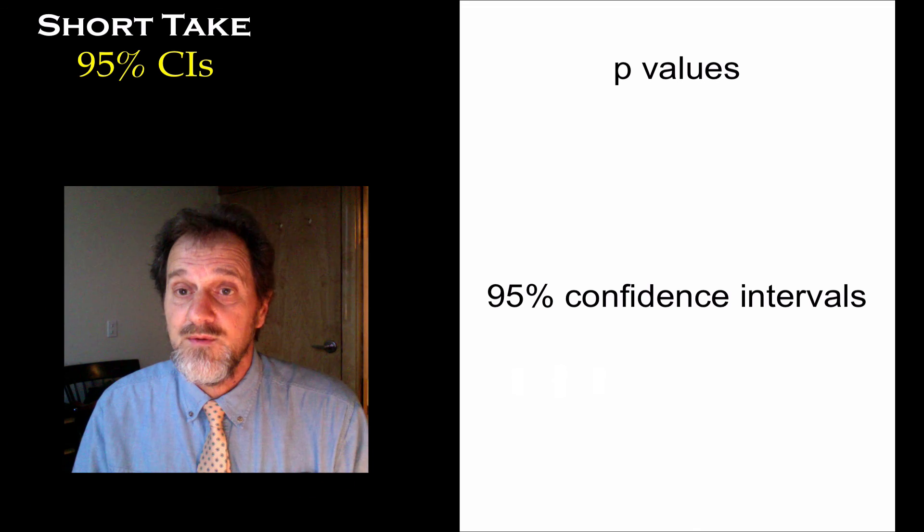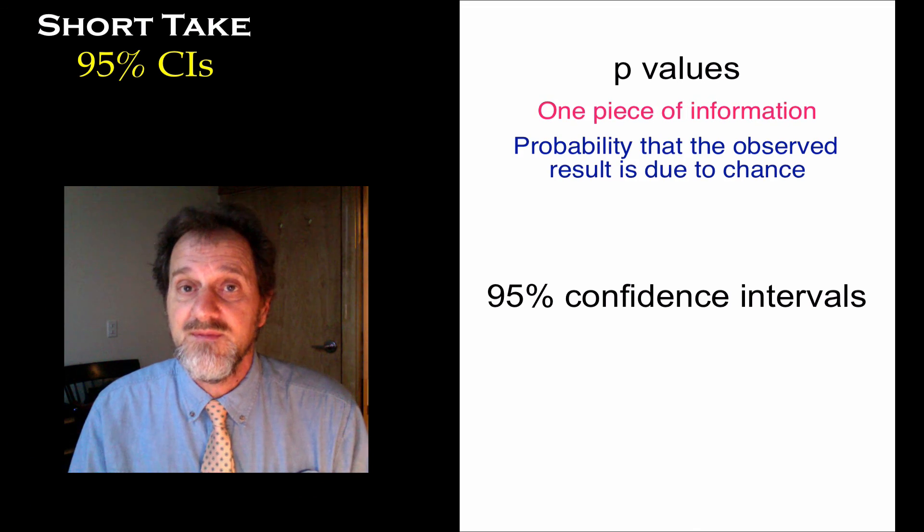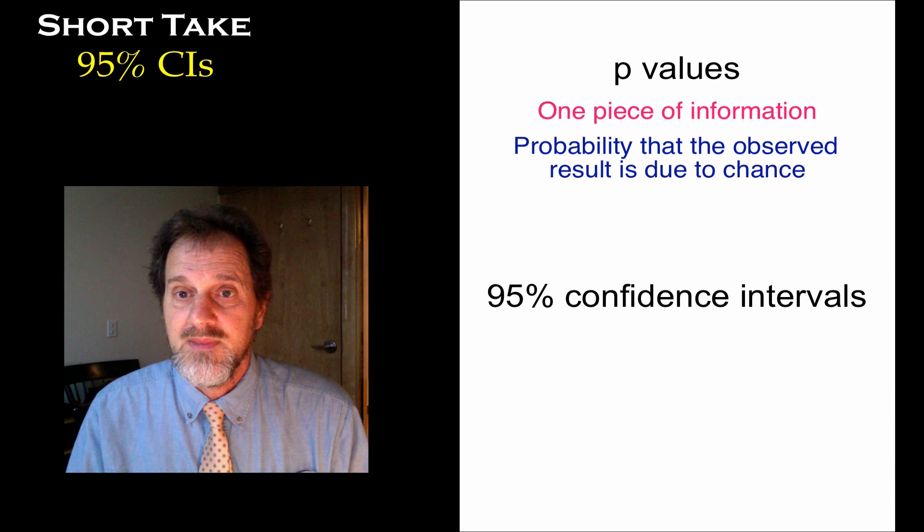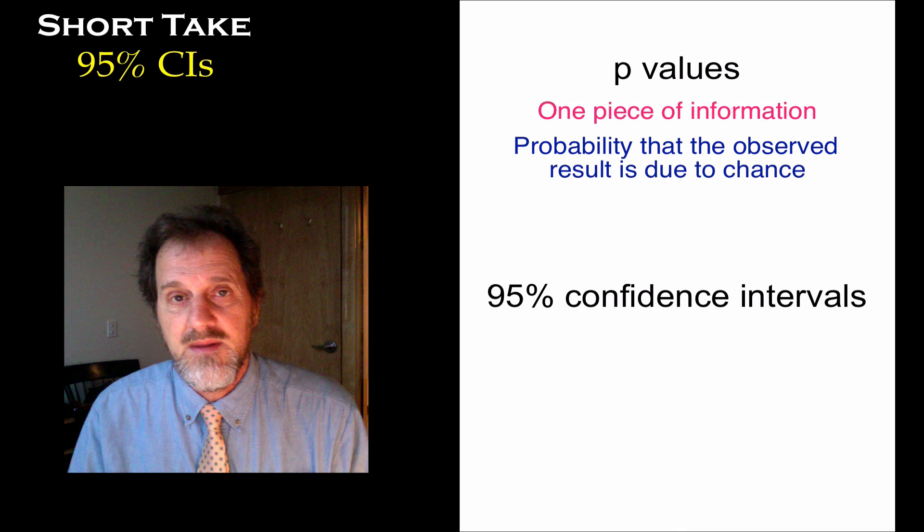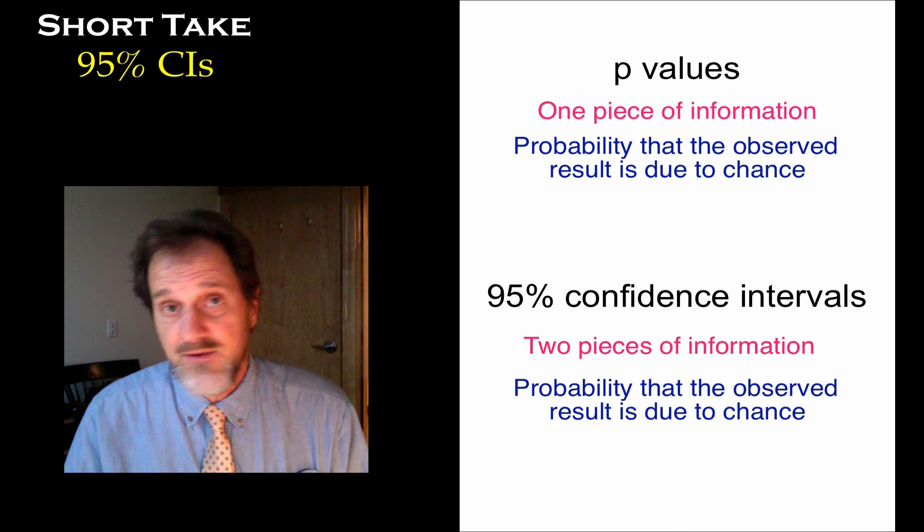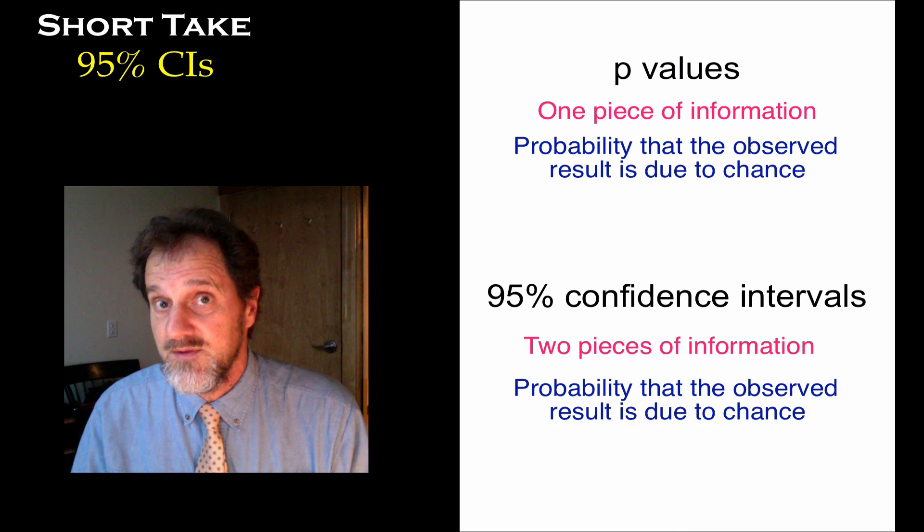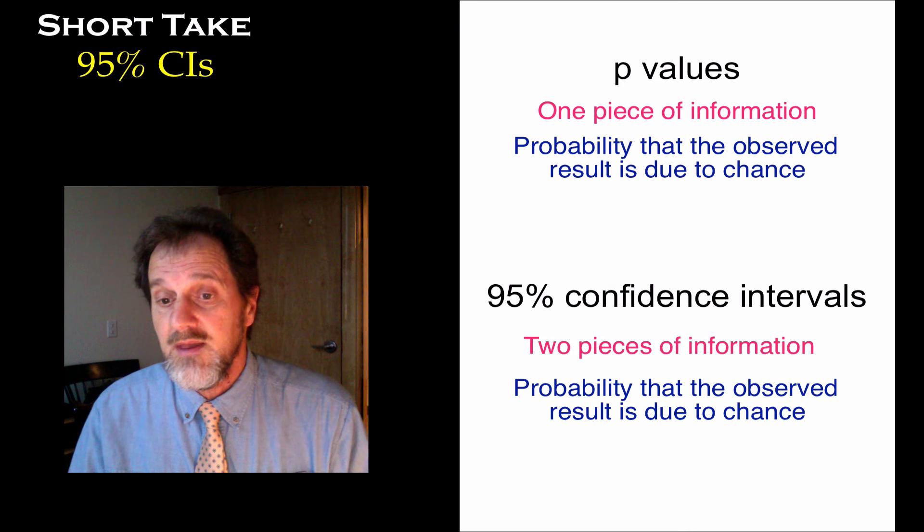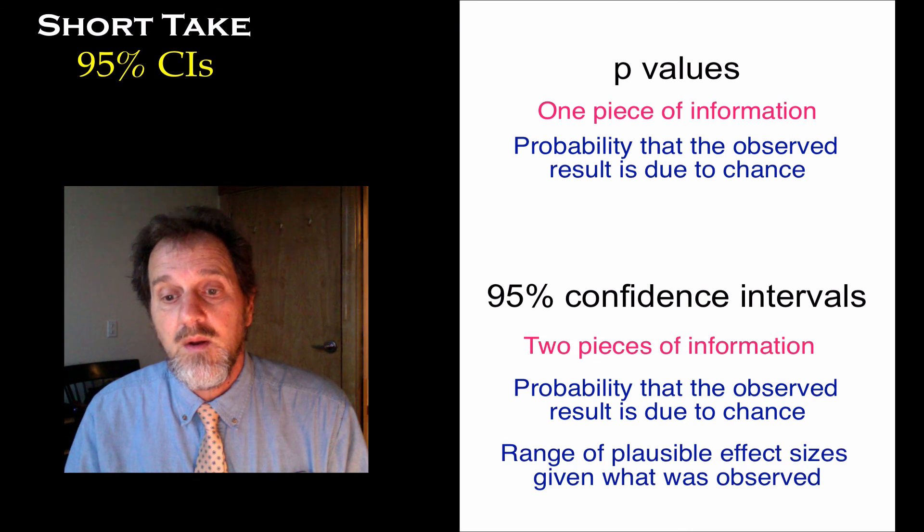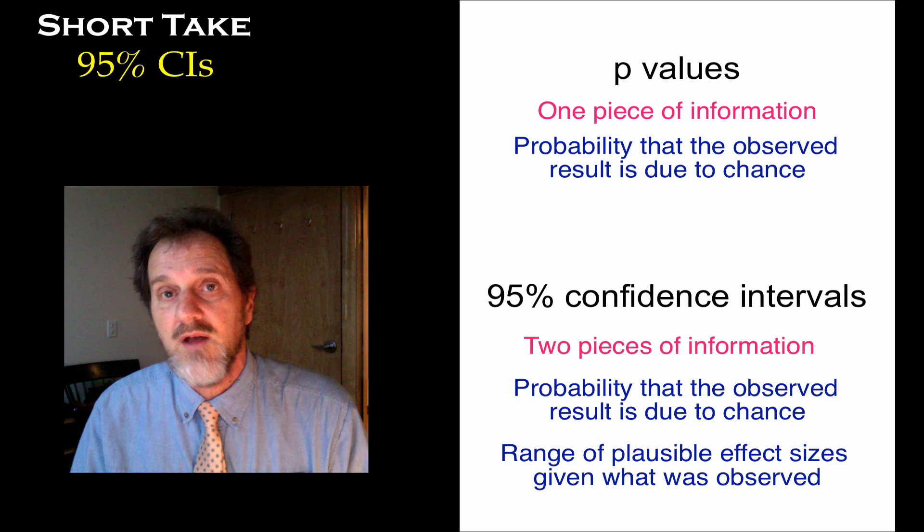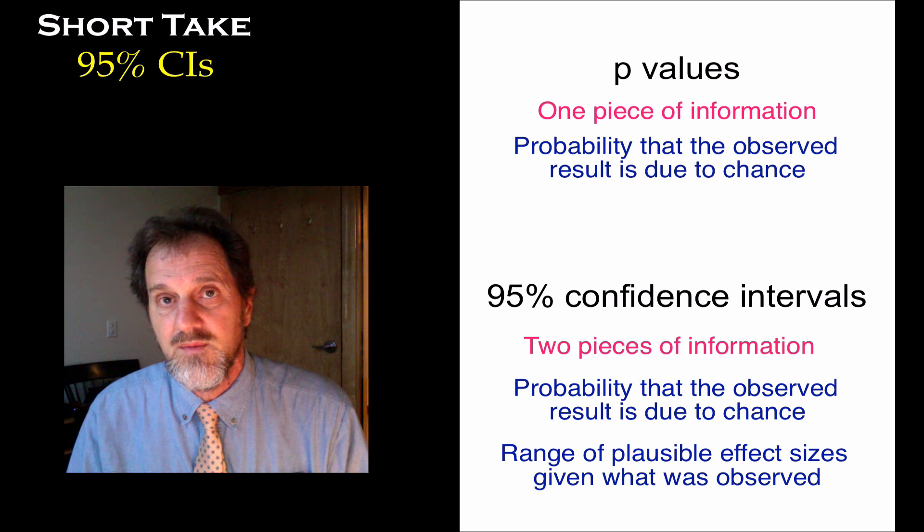So, p-values have one piece of information. It's the probability that the observed result is due to chance. 95% confidence intervals, on the other hand, have two pieces of information. It tells you the probability that the observed result is due to chance, but it also tells you the range of plausible effect sizes given what was observed. I hope this helps.